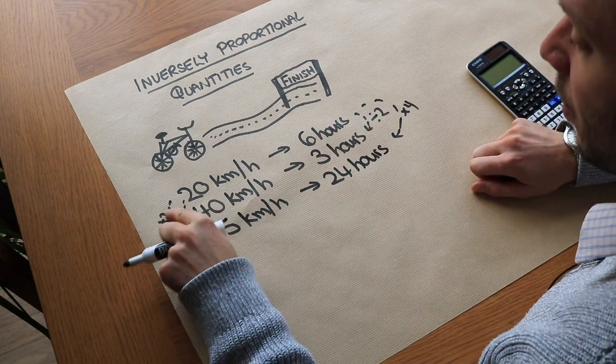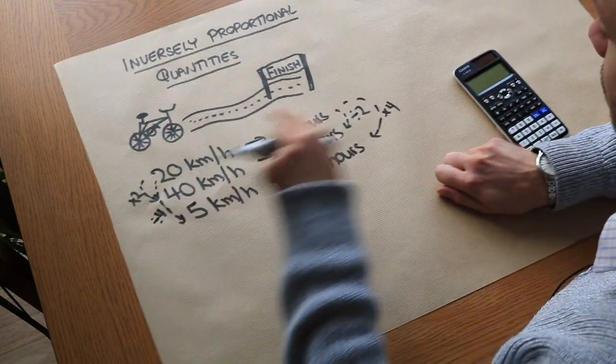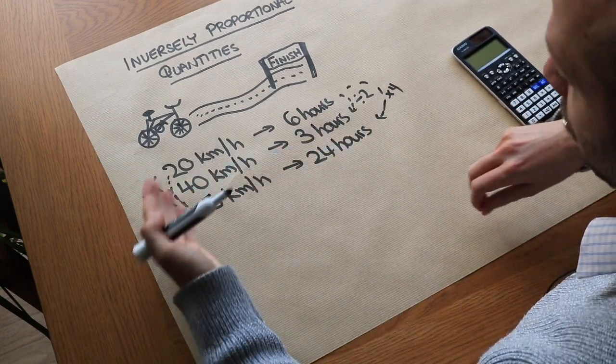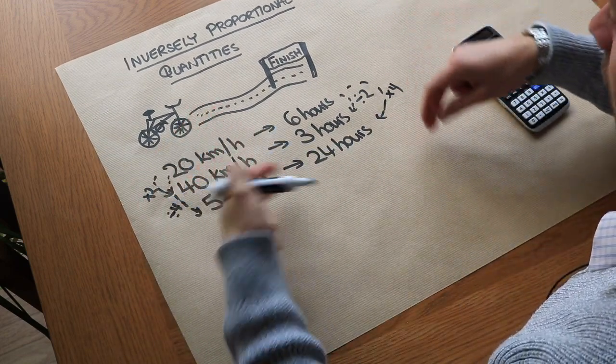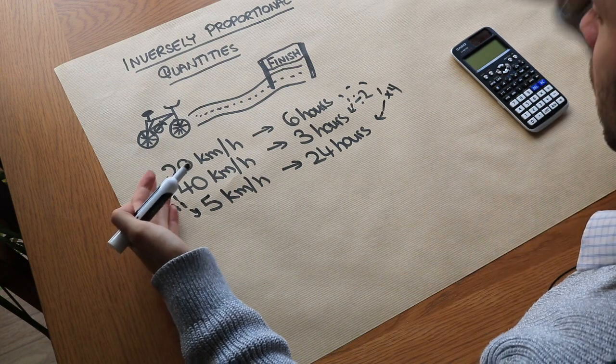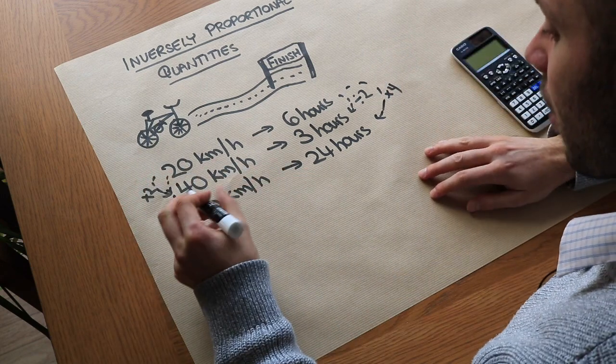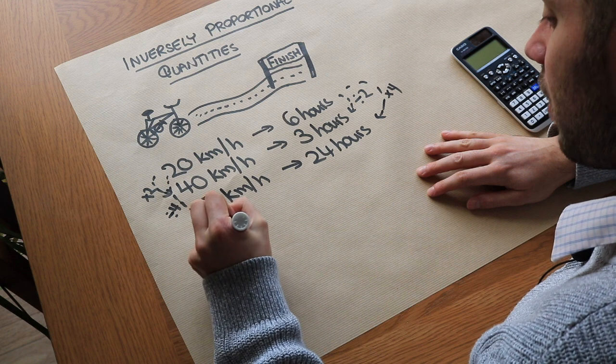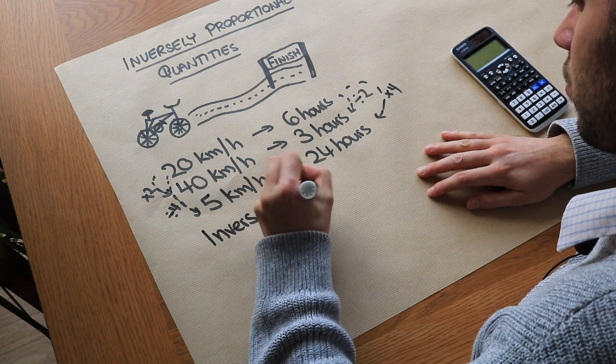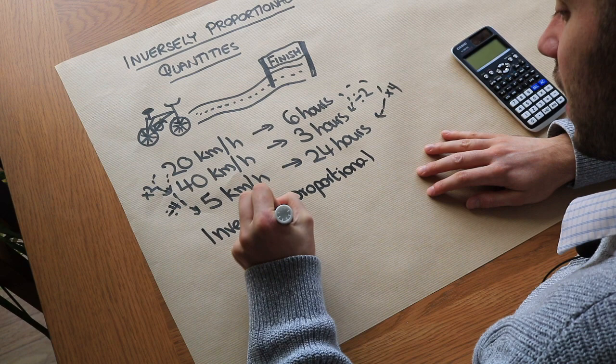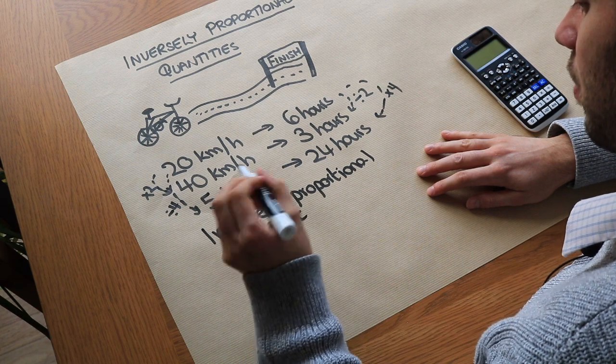So you can see whatever we're scaling this by, we're doing the opposite amount of time. So if we double the speed, we halve the time. If we triple the speed, we third the time, etc. And we say that these are inversely proportional quantities. So speed and time are inversely proportional.